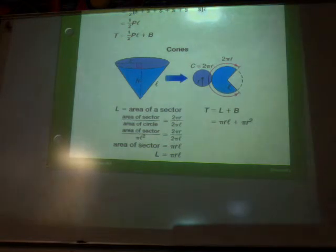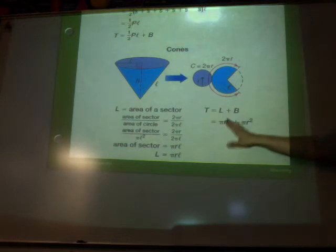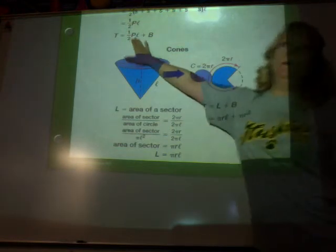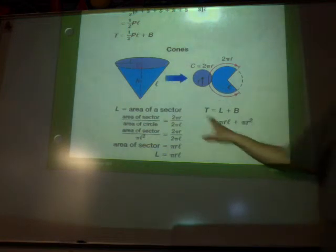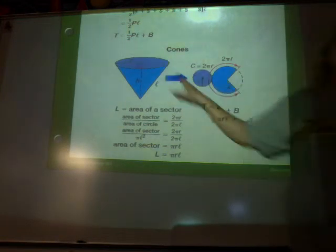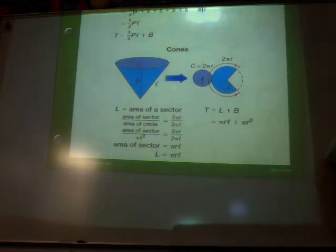Alright, so your total surface area, this is your lateral. Then we're going to add π r squared. This is the area of the circular base. Now you'll notice that the lateral areas of the pyramid and the cones have something in common. What are they? The slant height.